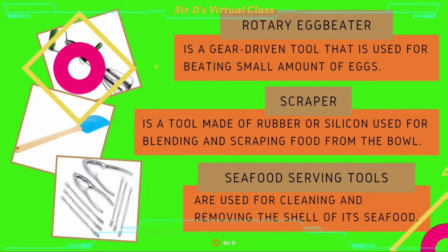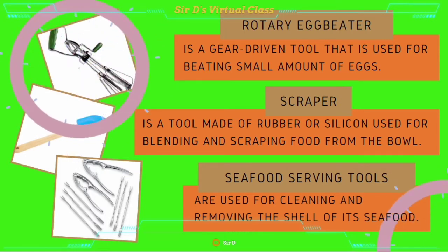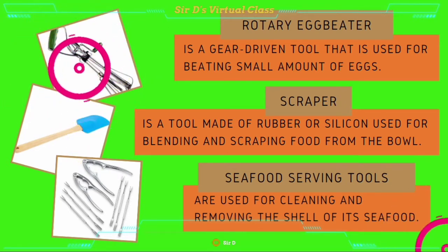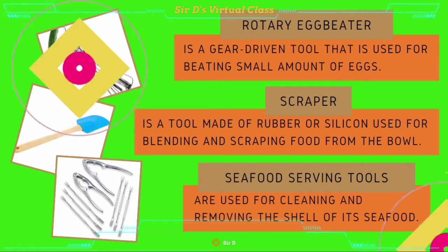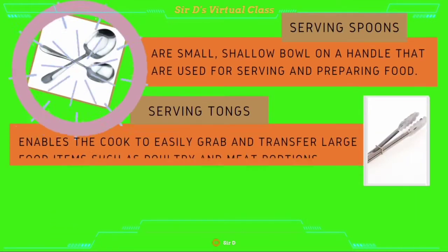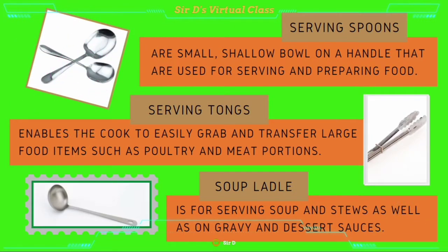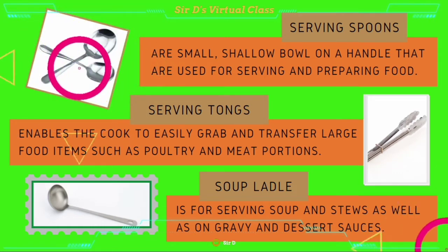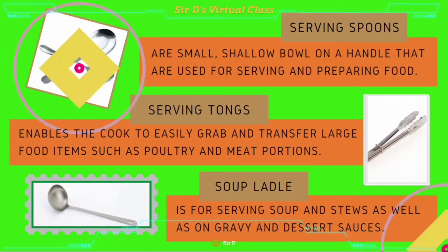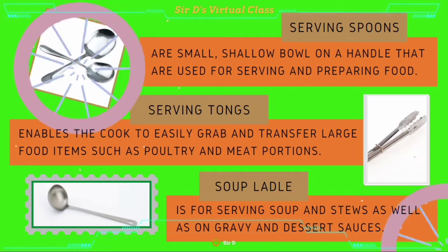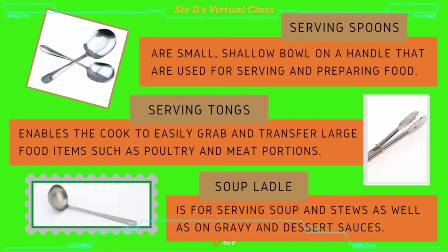Rotary egg beater is a gear-driven tool that is used for beating a small amount of eggs. Scraper is a tool made of rubber or silicone, used for blending and scraping food from the bowl. Seafood serving tools are used for cleaning and removing the shell from seafood. Serving spoons are small shallow bowls on a handle that are used for serving and preparing food. Serving tongs enable the cook to easily grab and transfer large food items, such as poultry and meat portions. Soup ladle is for serving soup and stews, as well as gravy and dessert sauces.